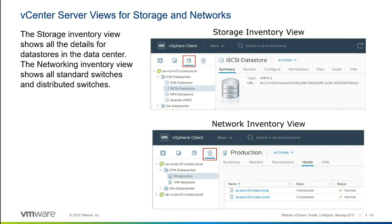The next two views are for storage and networks. Under storage, you'll see again vCenter and your data center, but all of the data stores — these are all the places that you can store virtual machine files. Under networking, you see a list of your virtual machine port groups — which networks do you want your virtual machine to attach to? By using these four views, you really have a good working set of tools by which to manage your entire vCenter.